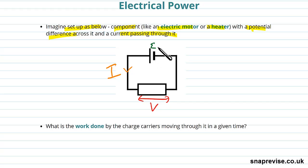We have a potential difference across it and the cell has an electromotive force of epsilon. So what is the work done by the charge carriers moving through this component in a given time?